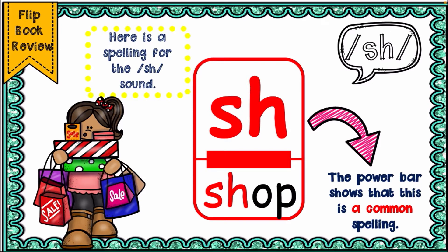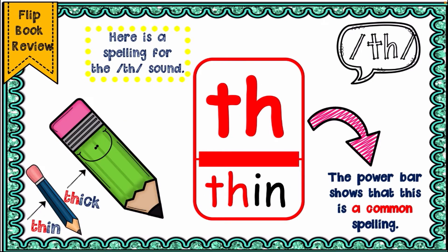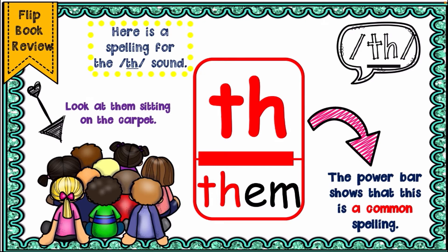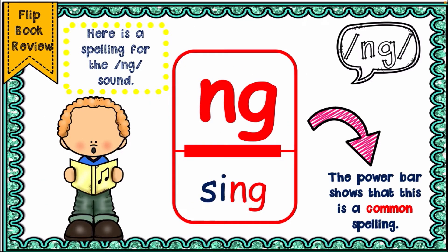We have the /sh/ sound as in 'shop'. We have the /th/ sound — it's not pronounced /d/, it's pronounced /th/. The consonant digraph T-H came together to form the /th/ sound, as in 'thin' and 'them'. We also have the /nk/ sound, which is present in words like 'sing', 'ring', 'rang', 'sang', 'sung', and 'king'.